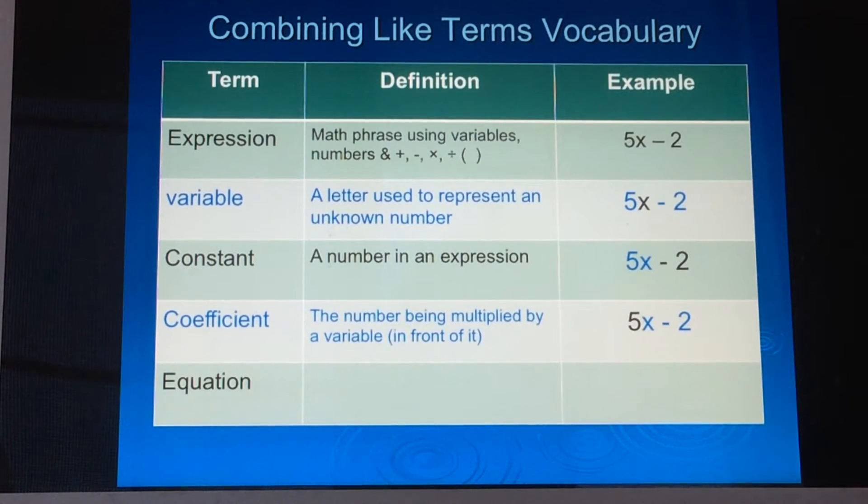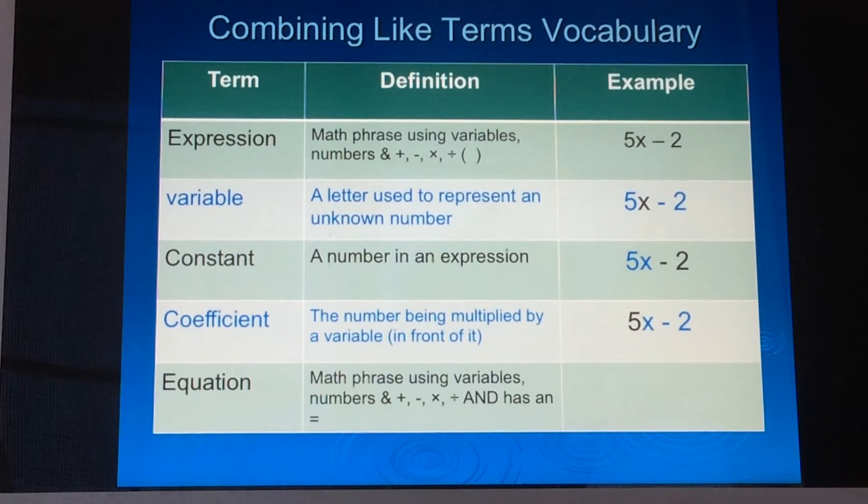The last term we're going to talk about is equation. And I have the equation in here because I want you to know the difference between an equation and an expression. There's only one very small difference between the two of them. And the difference is that an equation has an equal sign. So it's a math phrase using variables, numbers, and addition, subtraction, multiplication, division. And it has an equal sign. So if we were to take the expression 5x minus 2, we would just have to add an equal sign and another number or another value to set it equal to. And that turns the expression into an equation.